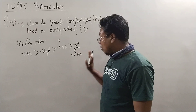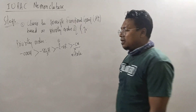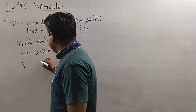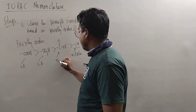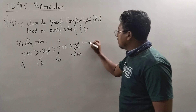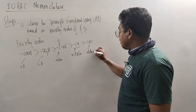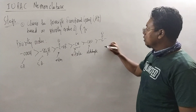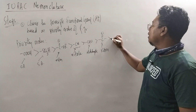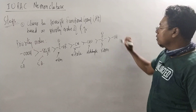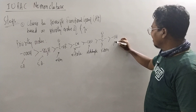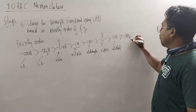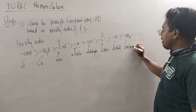This is a carboxylic acid, this is sulfonic acid, this is ester, and this is CHO — aldehyde. And this is ketone. After aldehyde then comes our alcohol. Then comes our amine.